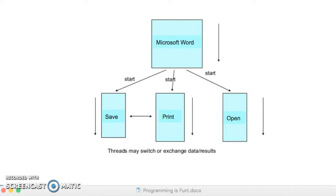Let's go over a real-world example of multi-threading. Let's say you're typing in a text editor, such as Microsoft Word, which corresponds to thread A. When you press Ctrl-S to save the document, the editor thread is interrupted by thread B, which proceeds to save your data. There may be many other threads that each have their own functionality, such as the print function or the open file function.